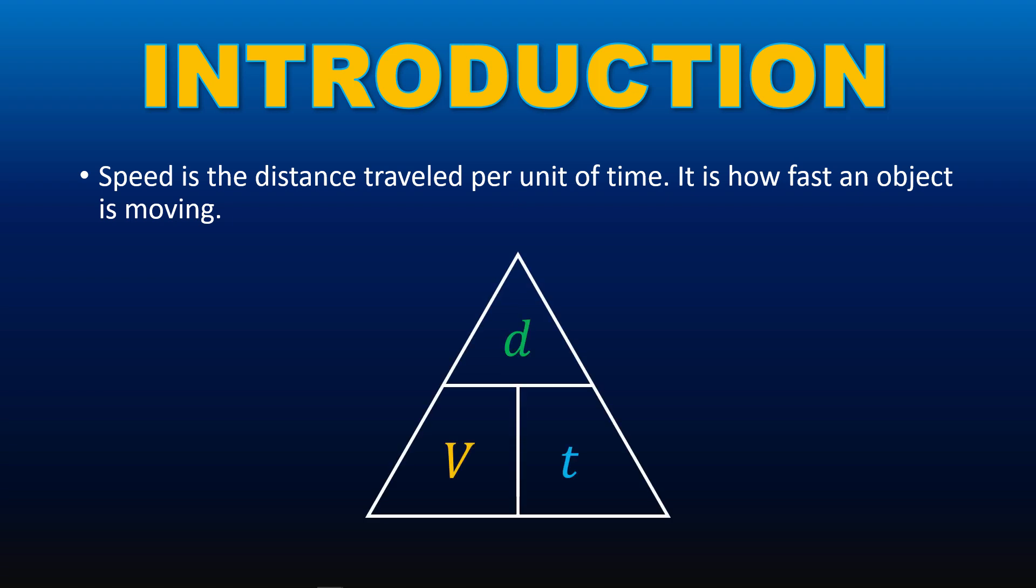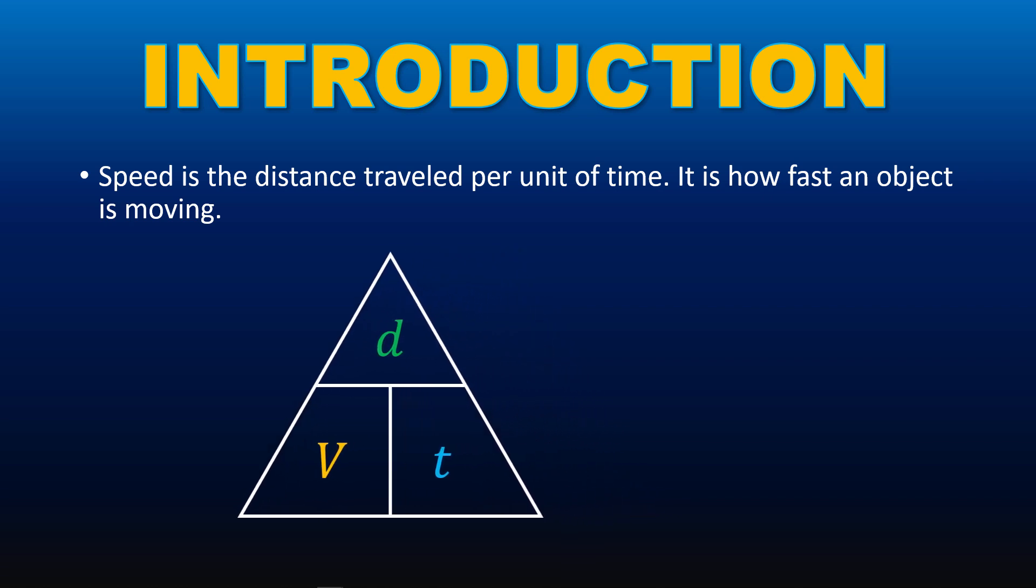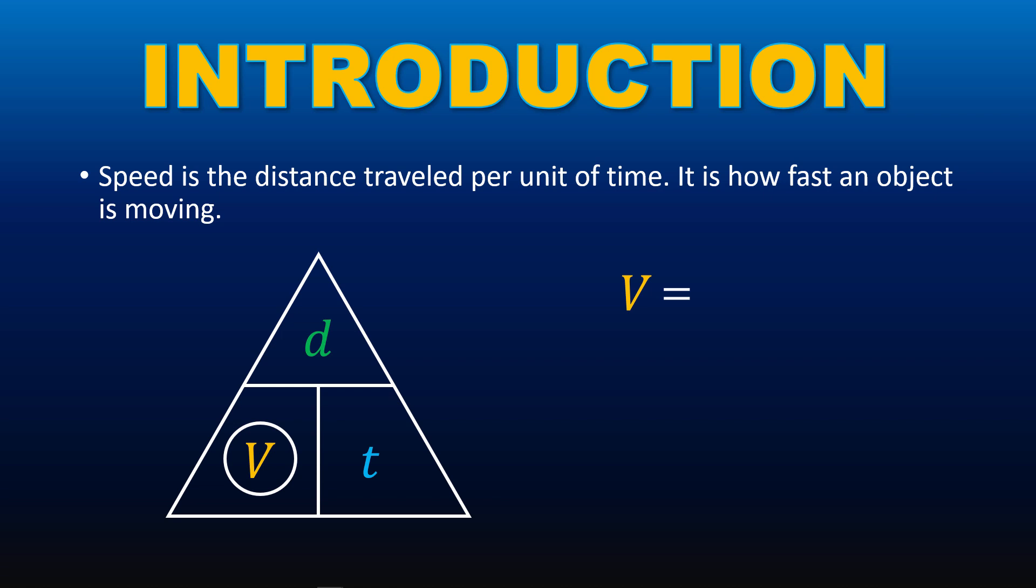The relationship between time, speed and distance are illustrated using the triangle on the screen. Where D stands for distance, V stands for speed or velocity, and T stands for time. From this triangle, we can derive three formulas. The first one is velocity equals distance over time. The second one is distance equals speed multiplied by time. And the third one is time equals distance over speed.